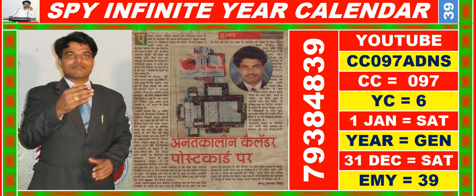In this video you are watching SPY Infinite year calendar for the year having calendar code equal to 097. You may also search it on YouTube by CC097 ADNS.